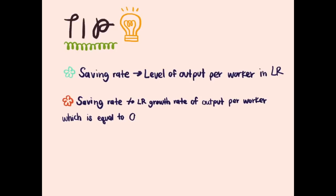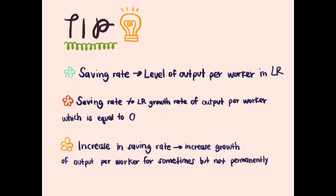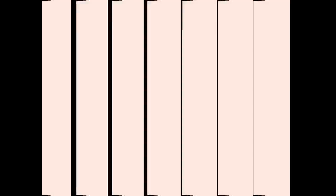Saving rate affects the level of output per worker in the long run. Saving rate does not affect the long-run growth rate of output per worker, which is equal to zero. An increase in saving rate will lead to increasing growth of output per worker for some time, but not permanently.